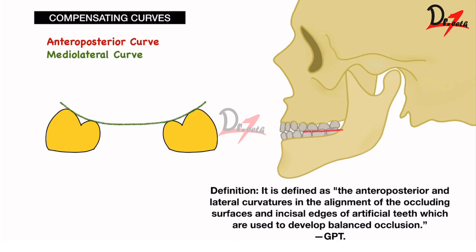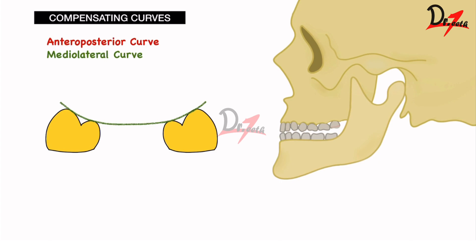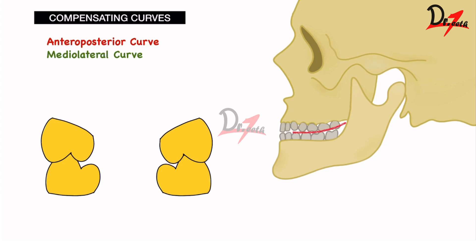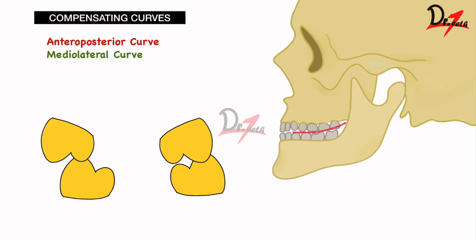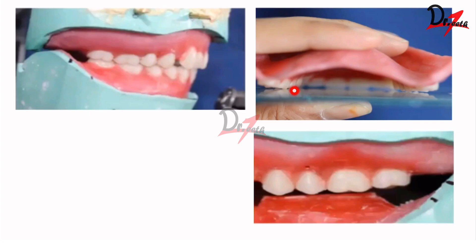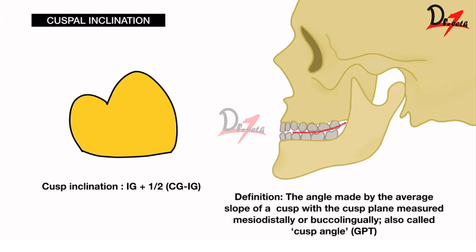The anterior-posterior curve runs from the tip of the canine all the way to the last tooth toward the ramus of the mandible. The medial-lateral curve runs from the buccal cusp to the lingual cusp. If we have a flat compensating curve, when the patient moves the mandible forward there will be a lot of space, so we increase the compensating curve to achieve balance. For lateral movements, one cusp is always in contact keeping the denture stable. In teeth arrangement, the mesopalatal cusp touches the glass slab — this represents the curve of Wilson.